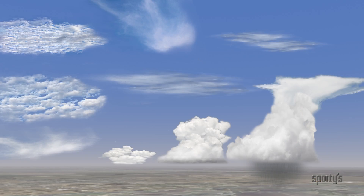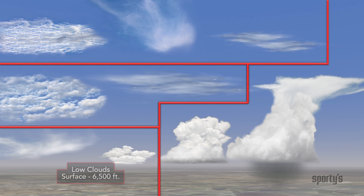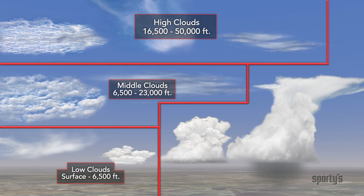Clouds are further classified according to the altitude at which they develop. There are four families of clouds: low-level clouds, mid-level clouds, high-level clouds, and clouds that develop vertically and may span all three levels.